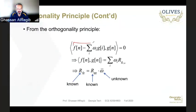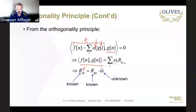So the orthogonality principle tells us that the error — which is the difference between the original signal f and the estimate of f, where the estimate of f is a weighted combination of the observation signal g — and the signal g are orthogonal to each other. If we rearrange these terms, what we have on the left-hand side is nothing but the cross-correlation between f and g, and on the right-hand side is the product between the autocorrelation of g and this weight vector.